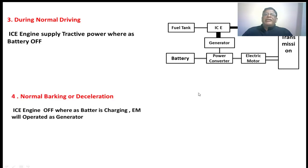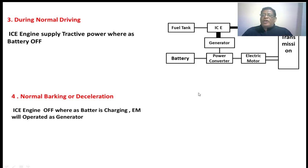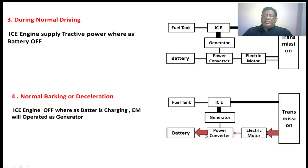Normal braking and deceleration. When the vehicle is going in a downward direction, high kinetic energy will be stored in the wheels of the vehicle, and that is given back to the battery through the electric motor and converter. That energy will be stored in the battery so that the speed of the motor will be decreased. This type of braking is nothing but regenerative braking.